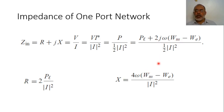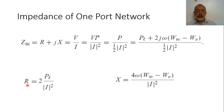If the stored magnetic energy is greater than the stored electric energy, this corresponds to an inductive effect. This gives the definition of resistance and reactance in terms of the dissipated power, stored energy, and equivalent current at the port of the network — which is the concept and definition of the impedance of a one-port network.